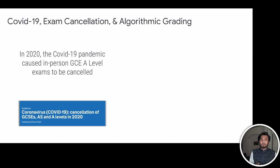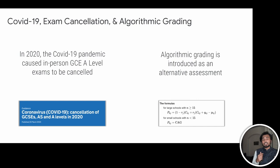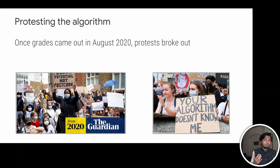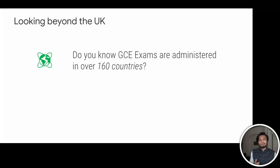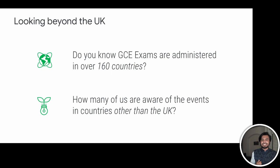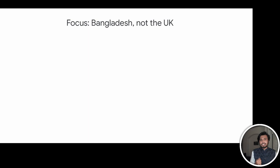Our story begins in 2020 when, due to COVID-19, in-person exams for the GCE A-levels — a UK-based exam — were canceled. So instead of real exams, the boards introduced an algorithm to grade as an alternative assessment. However, once grades were released, protests broke out. But did you know that the GCE exams are actually administered in over 160 countries globally, many of them being Commonwealth countries? How many of us are aware of the events in countries other than the UK?